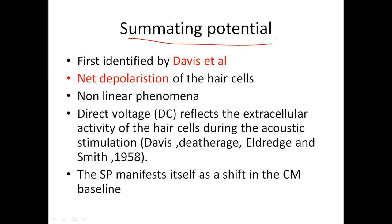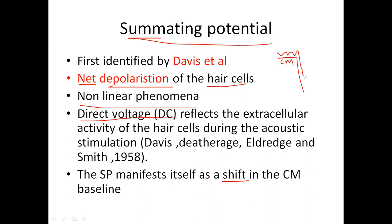The next potential is the summating potential. Summating means sum — the net depolarization of all the hair cells in the cochlea. It also has a non-linear phenomenon, and you can see a direct voltage — there is no alternating component here. From the cochlear microphonic, you can see a direct deflection. It reflects the extracellular activity of the hair cells during acoustic stimulation. The SP manifests itself as a shift in the cochlear microphonic baseline.